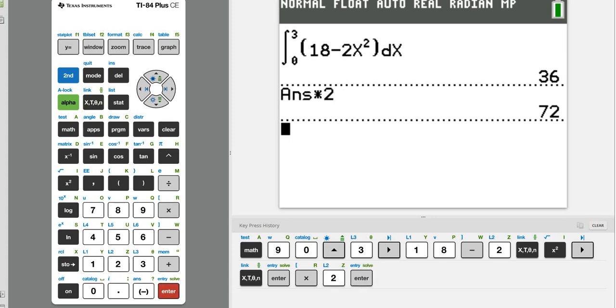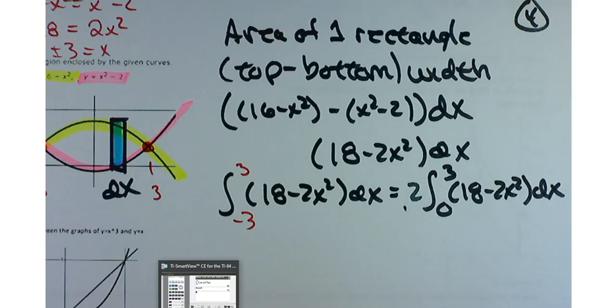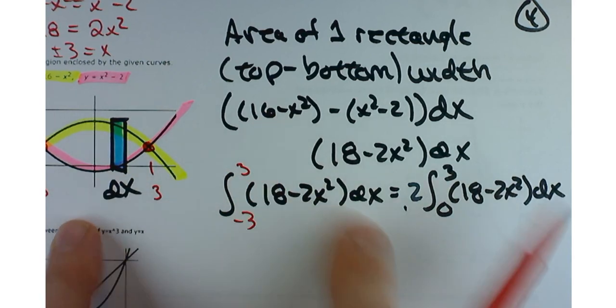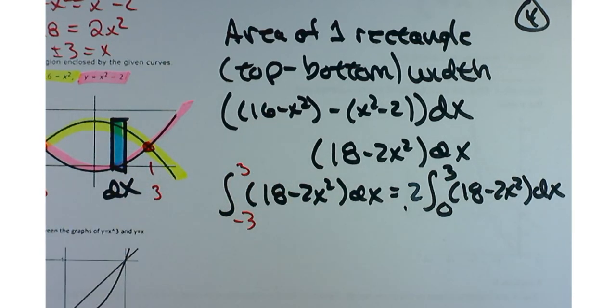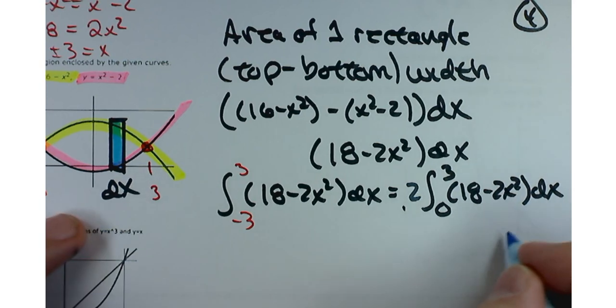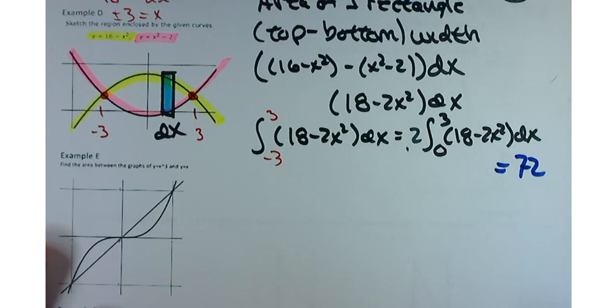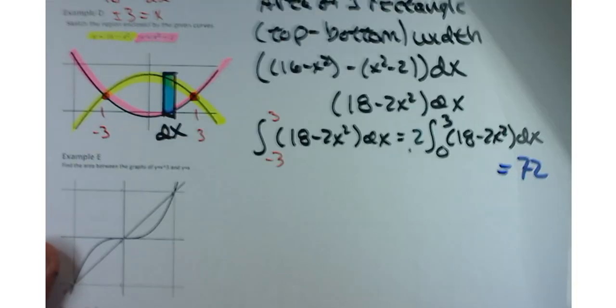We'll go to the math menu, math 9, integrate from 0 to 3 of 18 minus 2x squared, and then put in the dx. That's almost our answer. What else do I need to do? Times 2. So, 72. And that's your answer.